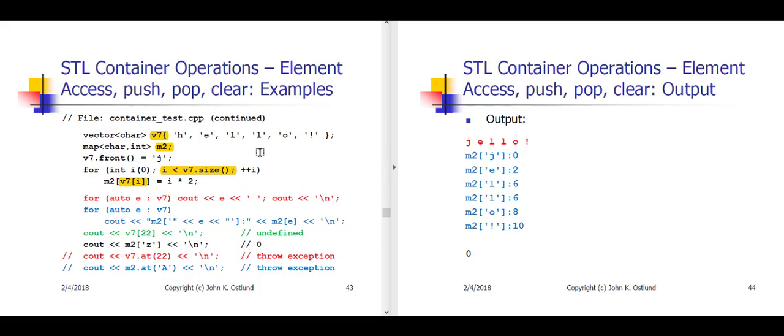The first time through the loop, i is zero. V7 sub i is the little j that is now the first element in v7. And so when I say M2 sub little j, since M2 is empty, that's going to create a pair in M2 with a key of little j and a value of the default for int, so the value will be zero. What I get back from M2 sub j is a reference to that value component of the pair. Into that value component, which is initially zero, I'm assigning some new value — specifically i times two. Here i's value is zero, zero times two is zero, so I am assigning a zero in place of the zero that was already the value part of this pair.